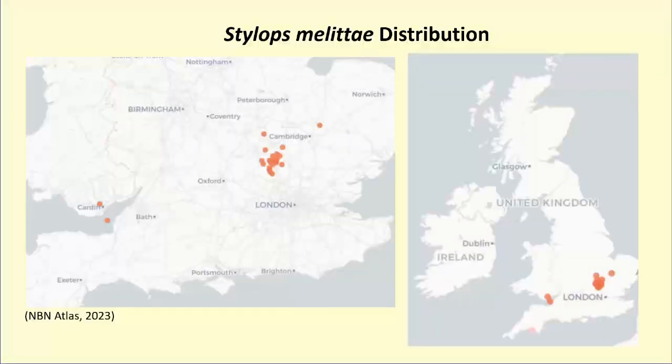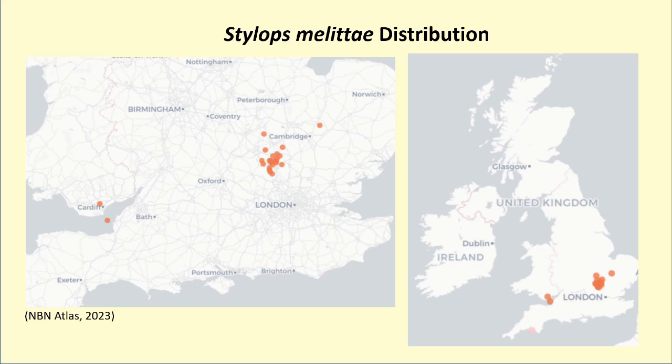UK official records of Stylops metidae are quite poor. However, the majority have been located around about the Bedfordshire county, with some sightings also being found just off the south of Wales.